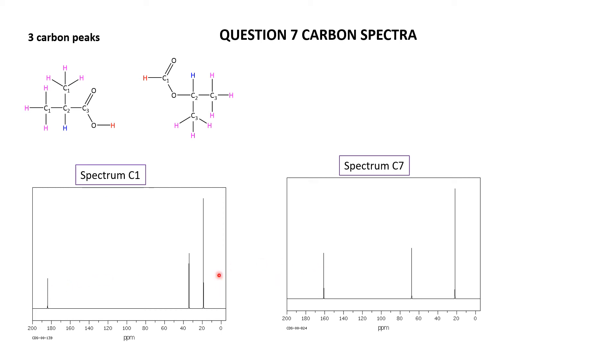OK, both of them have got a significantly downfield peak. Well, we expect that because we've got an acid group and an ester carbon there, acid carbon and ester carbon that appear between about 160 and 185. So that's those. OK, so those are not going to be much help to us in identifying them. However, continuing on,